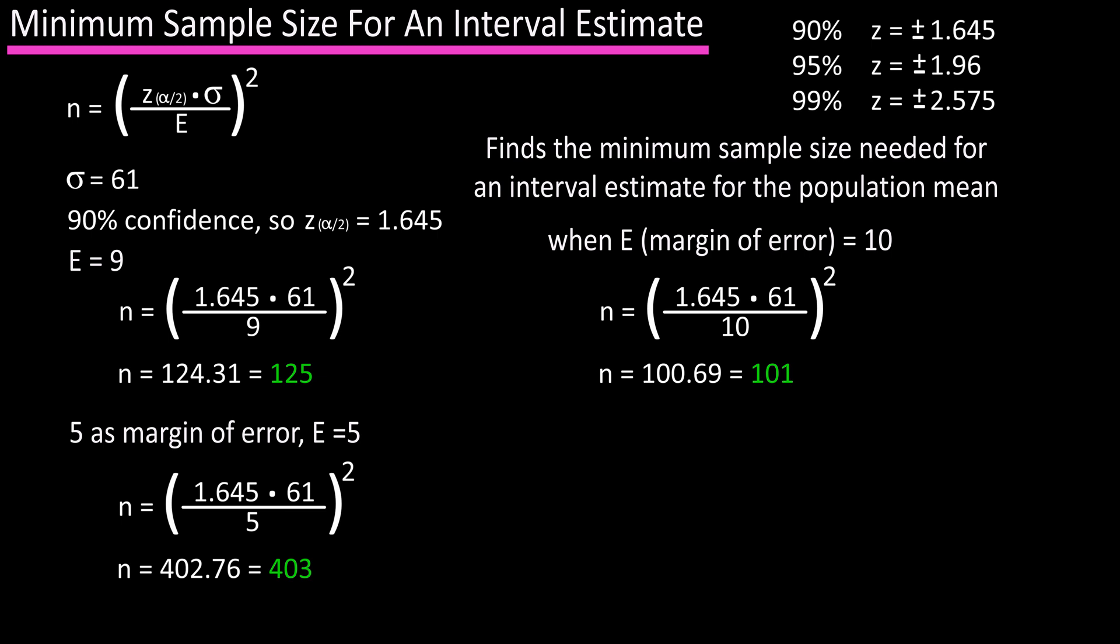One last one, same example, using 5 as the margin of error, but increase the confidence level to 99%, which has a z-score of 2.575. Plugging and calculating, we get 986.9, rounding off to 987.